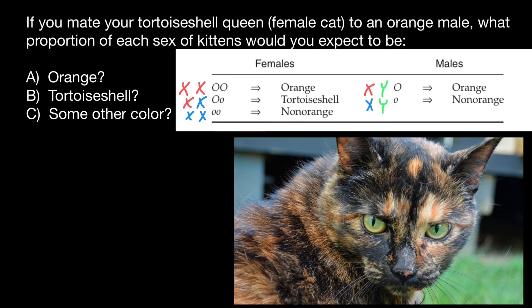Only two variants are possible for males, but three variants are possible for females. Those who are homozygous dominant are orange. Those who are heterozygous — and we consider this trait to be codominant — show the tortoiseshell pattern of orange and black patches. If both alleles are defective and produce no orange color, the cat will be any other color, which we call non-orange.